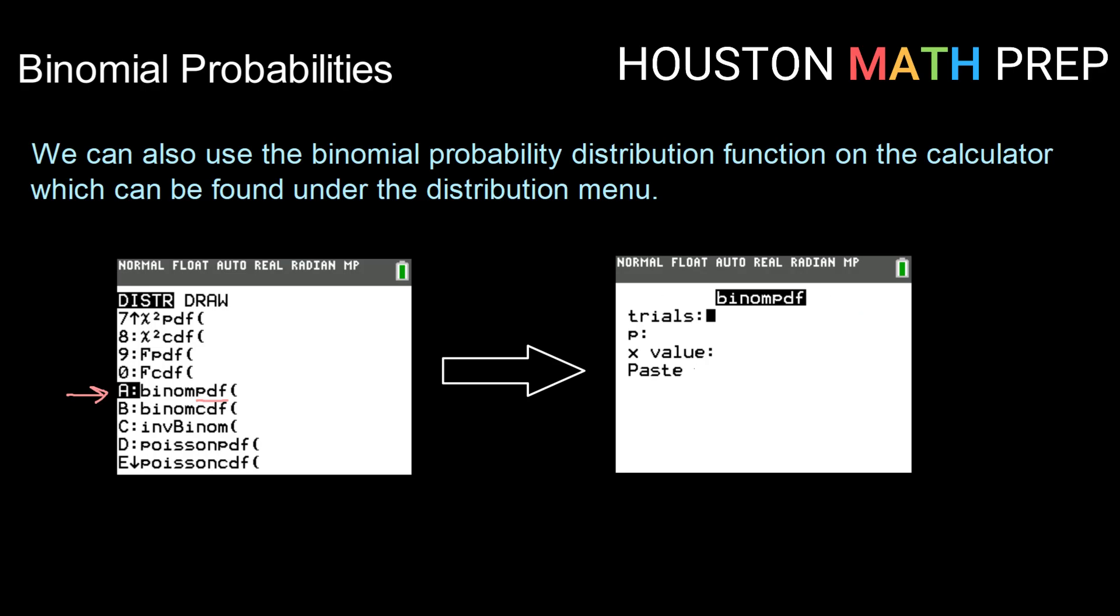It will ask you to enter your number of trials n, your p-value (probability of success), and your x-value. Then you'll highlight paste, which brings you to the home screen, and hit enter.